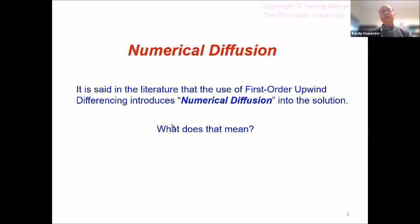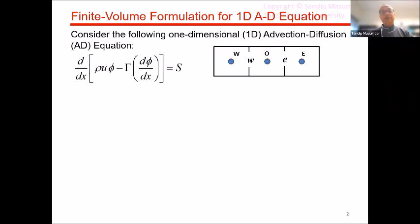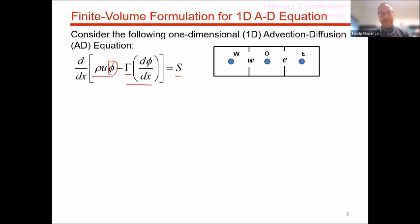To get started, we will look at the one-dimensional advection-diffusion equation. Our framework is the finite volume framework. This is your advective flux, and this is your diffusive flux, and on the right-hand side you have some sort of a source term. Most transport equations used in CFD have this framework where phi is the so-called transported scalar and gamma is the so-called diffusion coefficient. For heat transfer, this would be C_P times temperature and thermal conductivity. For fluid flow, this would be one of the components of the velocity vector and the dynamic viscosity.